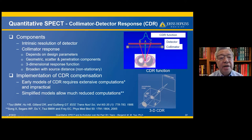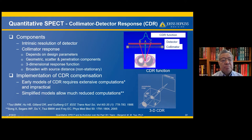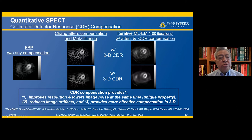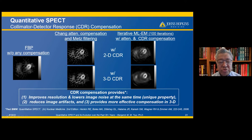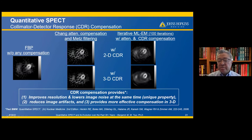For quantitative SPECT, the application of collimator-detector response compensation involves several components. Implementation evolved from earlier models requiring extensive computation to more simplified models allowing much reduced computation for clinical application. The effectiveness is shown: it improves resolution and lowers image noise simultaneously — a very unique property compared to conventional image processing methods. It reduces image artifacts, and the 3D compensation method is more effective than the 2D method.